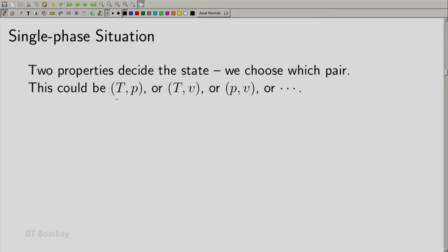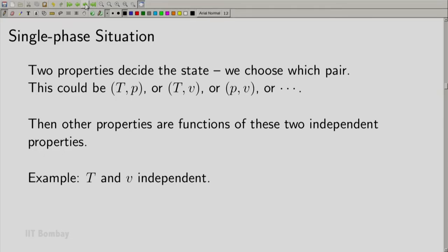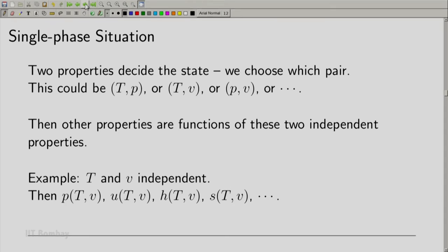Once you decide — for example, if you decide on temperature and pressure — then all other properties such as thermal energy, entropy, specific volume, enthalpy, or any other property you define will be considered to be a function of temperature and pressure. If you consider T and V as independent, then pressure will be a function of temperature and volume, and thermal energy and enthalpy would likewise be functions of T and V. Which pair to choose is left to us, based on convenience.